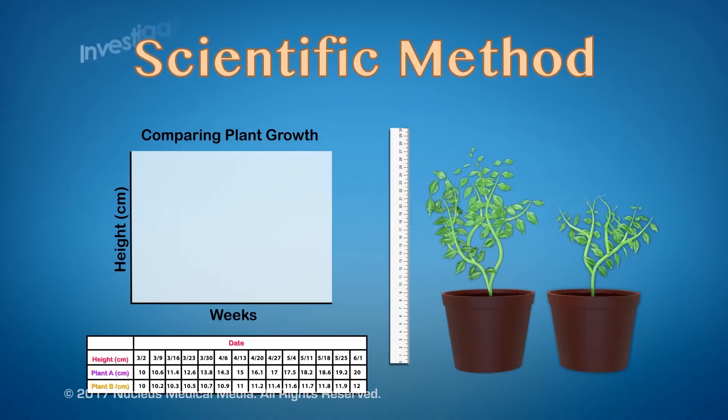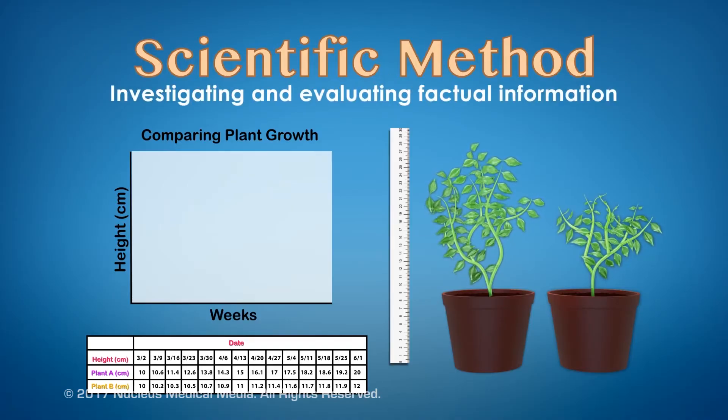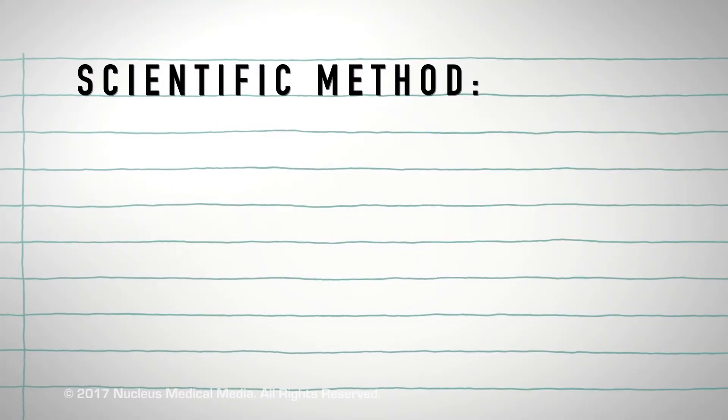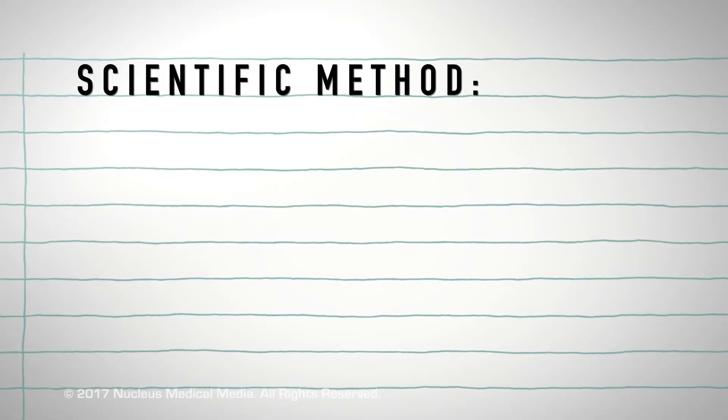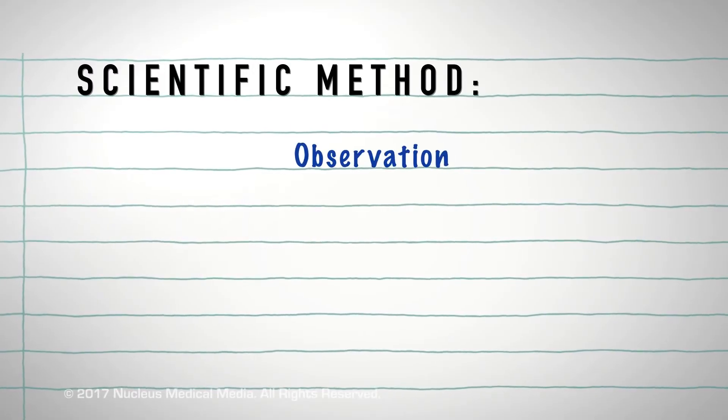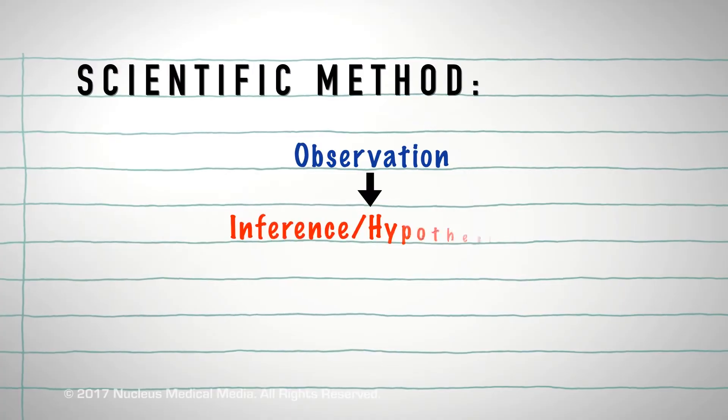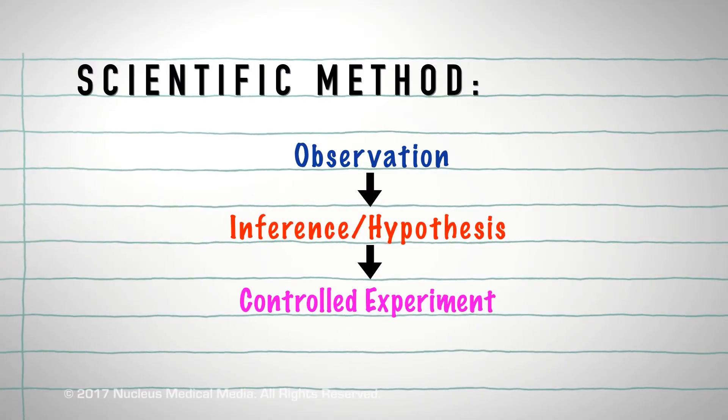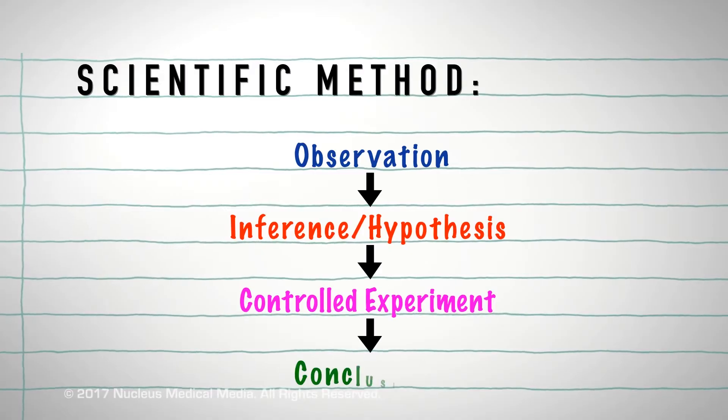The scientific method is an orderly way of investigating and evaluating factual information to learn how the world around us works. The basic steps of the scientific method are making an observation, forming an inference and developing a hypothesis, conducting a controlled experiment, and drawing conclusions.